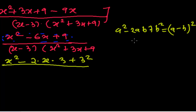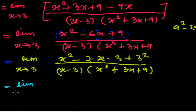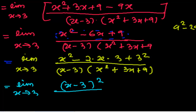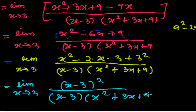So in the next step, the numerator becomes x minus 3 times x squared plus 3x plus 9. Then I can write the numerator as x minus 3 whole squared, or equivalently x minus 3 times x minus 3. Now this x minus 3 and that x minus 3 will cancel — there are two x minus 3 factors and only one in the denominator.